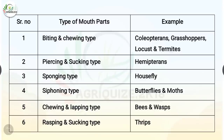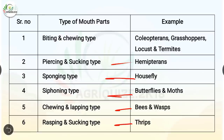For piercing and sucking type of mouth parts, the examples are hemipterans. For sponging type, the example is housefly. For siphoning type, the examples are butterflies and moths. For chewing and lapping type, the examples are bees and wasps. For rasping and sucking type, the example is thrips.